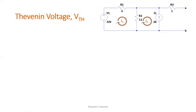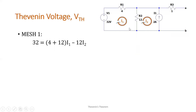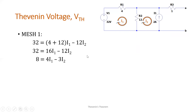Let's proceed with mesh analysis for mesh 1 and mesh 2. For mesh 1, we have: 32 equals (4 plus 12) times I1 minus the common resistance 12 ohms times I2. Simplifying further, we have 32 equals 16I1 minus 12I2. Simplifying again, 8 equals 4I1 minus 3I2. That is your first equation.